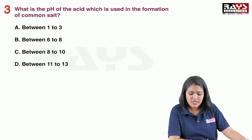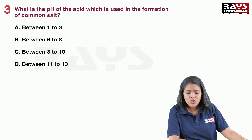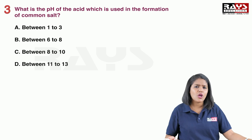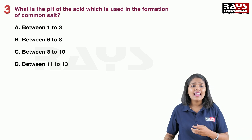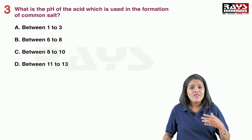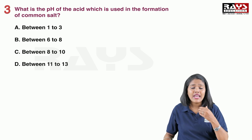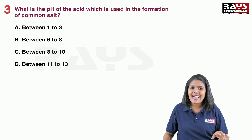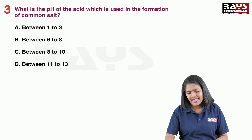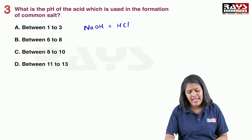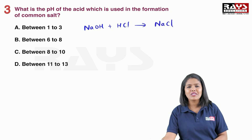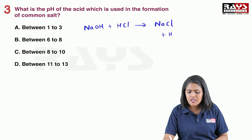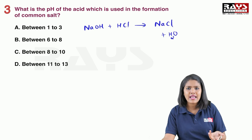Next, let's move to the third question: what is the pH of the acid used in the formation of common salt? Common salt means NaCl. To get NaCl as the product, we use HCl as the acid and NaOH as the base, and water is also formed. This is also an example of a neutralization reaction.